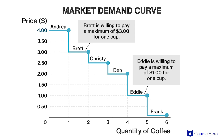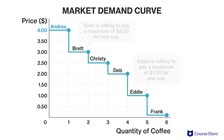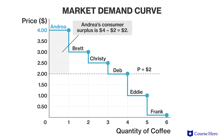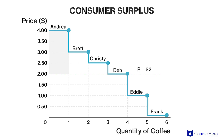In this scenario, if a cup of coffee is $4, the only individual out of the six that will pay for it is Andrea. Assuming the actual market price of a cup of coffee is $2, Andrea's individual consumer surplus is $2 — the difference between what she's willing to pay, $4, and what she actually pays, $2. Three out of the six individuals are willing to pay $2 for a cup of coffee. If we wanted to calculate the entire consumer surplus for the market, we would add Andrea's, Brett's, and Christie's individual consumer surplus together. This value would represent the total consumer surplus in the coffee market at a price of $2.